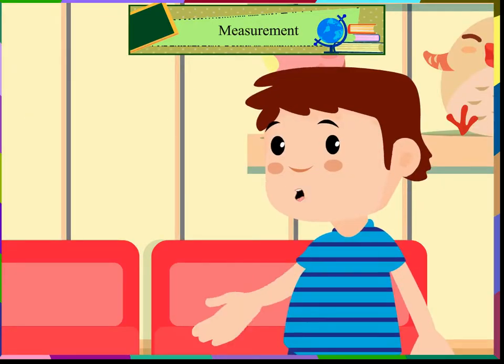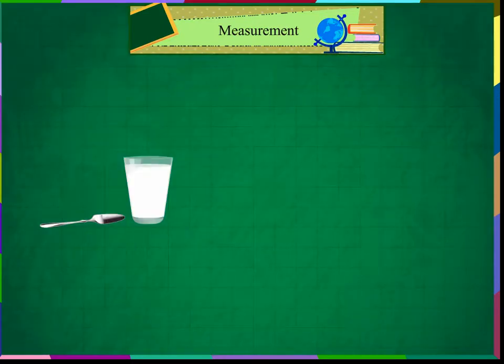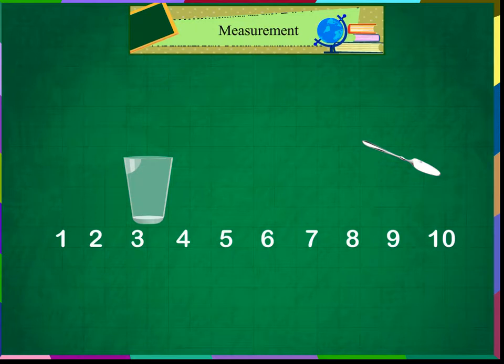Take a small glass of milk. Bring a spoon. Now, how many spoons of milk will this glass hold? It will hold 1, 2, 3, 4, 5, 6, 7, 8, 9, 10. 10 spoons of milk. The capacity of this small glass is 10 spoons.